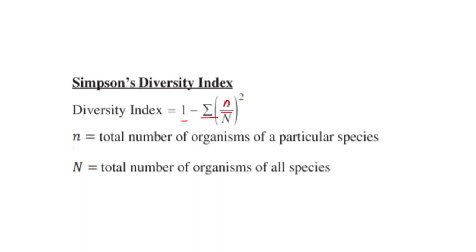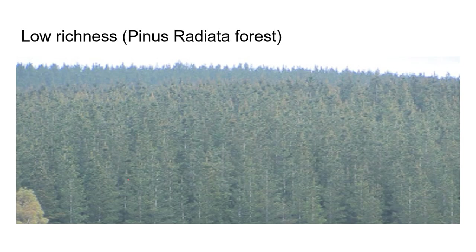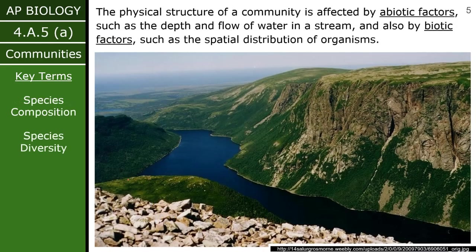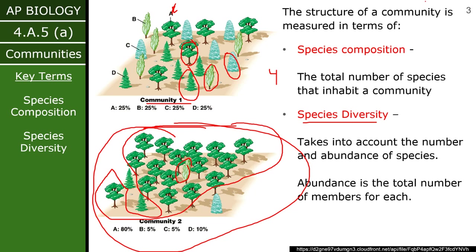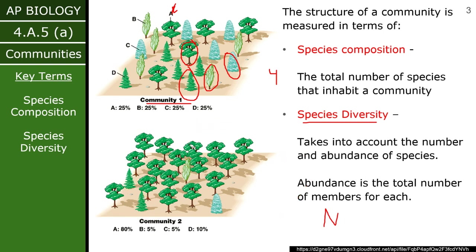We have to do that calculation multiple times. Little n is the total number of organisms of any one species, whereas big N is the total number of organisms of all species. So if we go over here to these original images and we need to find big N for community two, if we had to calculate big N — the total number of individuals — you literally just have to count them up: one, two, three, four, five, et cetera.